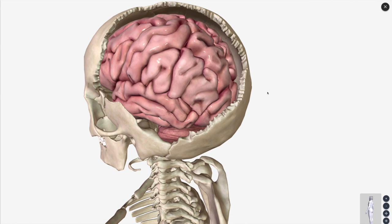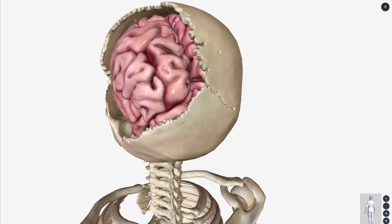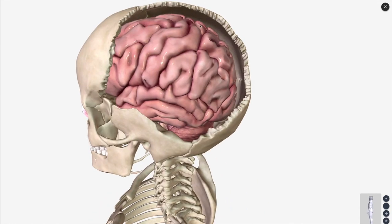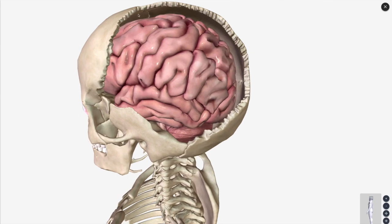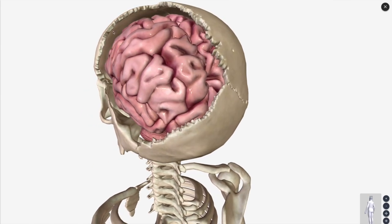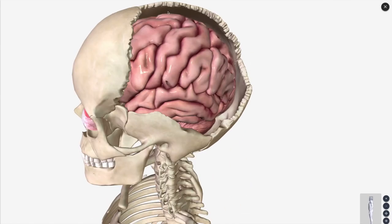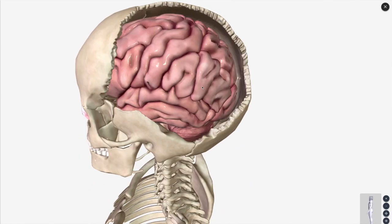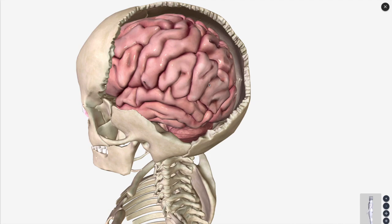So what lines the cranial cavity? That's going to be your periosteal dura mater. The periosteal dura mater is closely adhered to the skull all the way around and is going to line the cranial cavity.